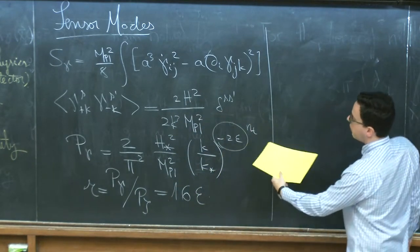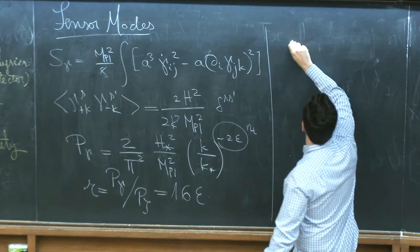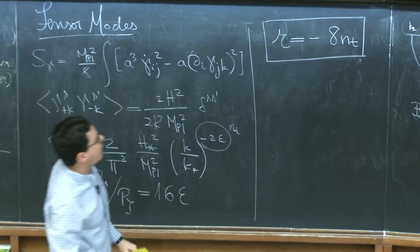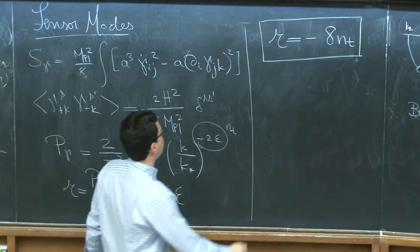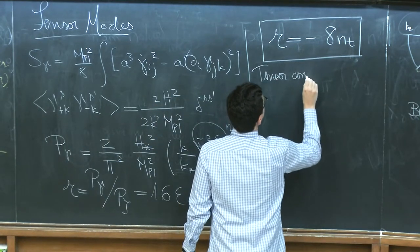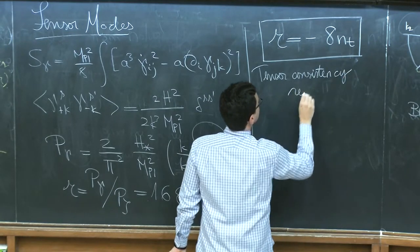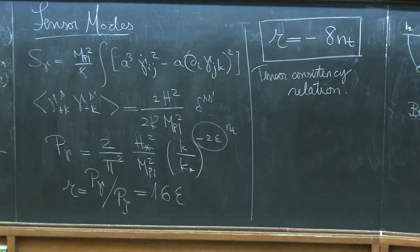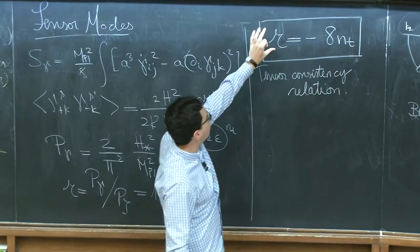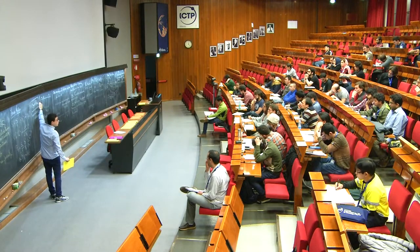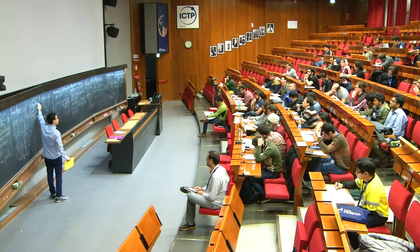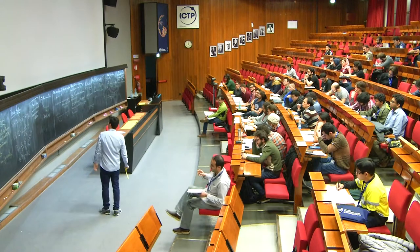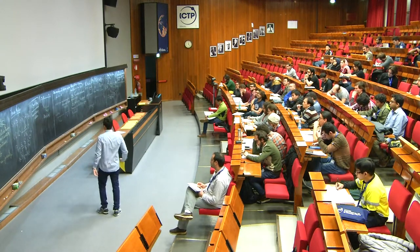From the formulas for n_T and r, you can write the tensor consistency relation r = -8*n_T. This is a prediction of weakly coupled single-field inflation. If we were to measure the tensor-to-scalar ratio, we would have a clean prediction for the tilt — they should be related by a factor of minus 8. The minus sign is related to the tilt being red.